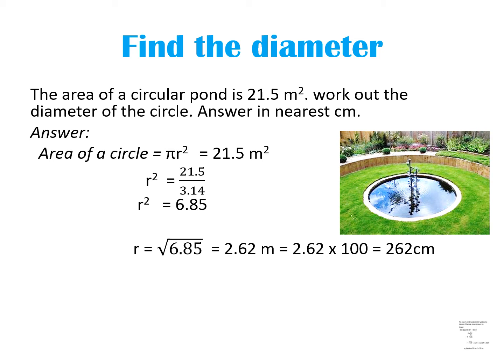But what is our question? We have to find the diameter. Diameter means twice the radius, so we multiply by 2. The diameter is 262 centimeters multiplied by 2, which equals 524 centimeters. In word problems, you have to read the questions clearly — the area of the circular pond is 21.5 meter square and the answer must be in the nearest centimeter. Read clearly and give your answers correctly.